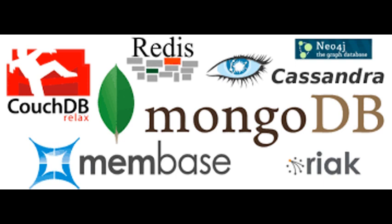The top open source distributed database management systems currently are MongoDB, Redis, Cassandra, PostgreSQL, and Elasticsearch. Many of these growing open source databases are using a non-SQL approach in favor of a less structured but faster and easier-to-update database.